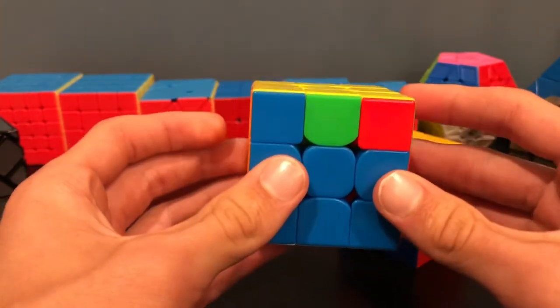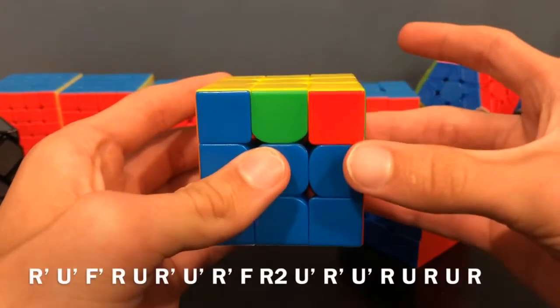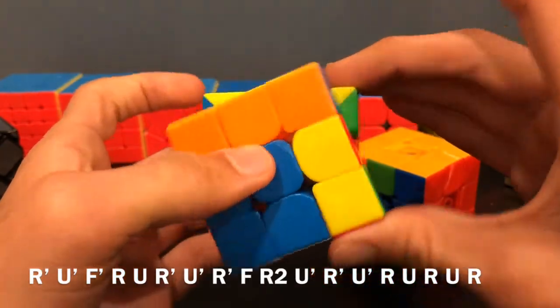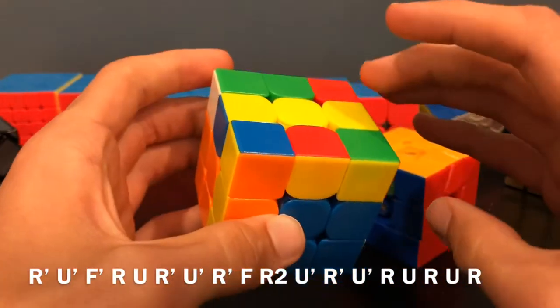Alright, so here's the algorithm for F-perm. So watch, I'm going to do R' U' F'. Okay, so there's my setup moves.